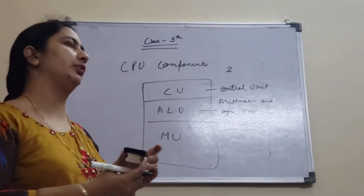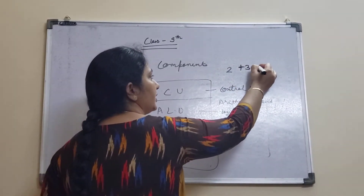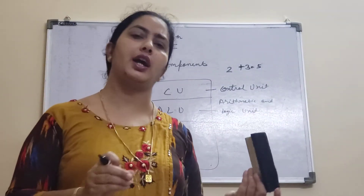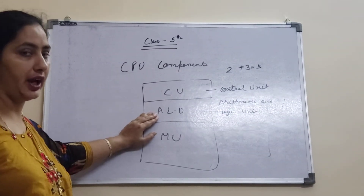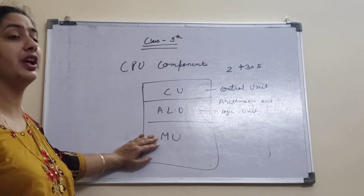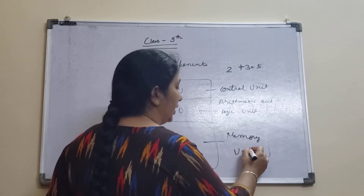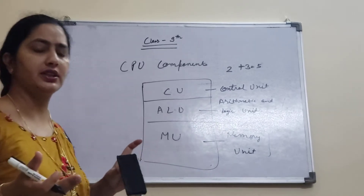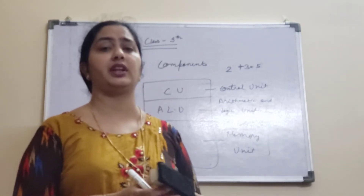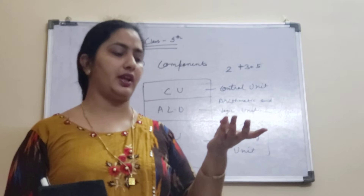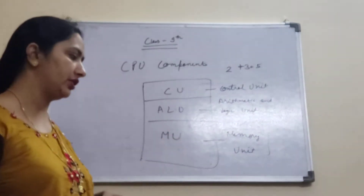That coordination work is done by the CU. Then we have the arithmetic and logic unit, or ALU, which actually does the processing — plus, minus, multiplication, or whatever other arithmetic or logical operation you want to perform. Then you have the memory unit, where you can store your data. You can store things even for a long period of time; unless you delete, it will remain. These are characteristics of the computer: it is very speedy, versatile, diligent, and many others.